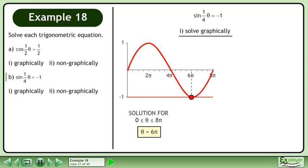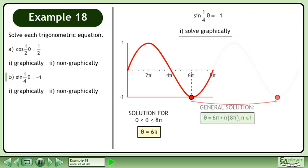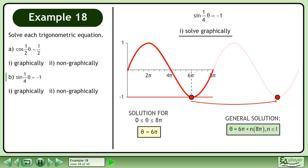The solution for the domain where theta is between 0 and 8pi is 6pi. The general solution is theta equals 6pi plus n times 8pi where n belongs to the set of integers.